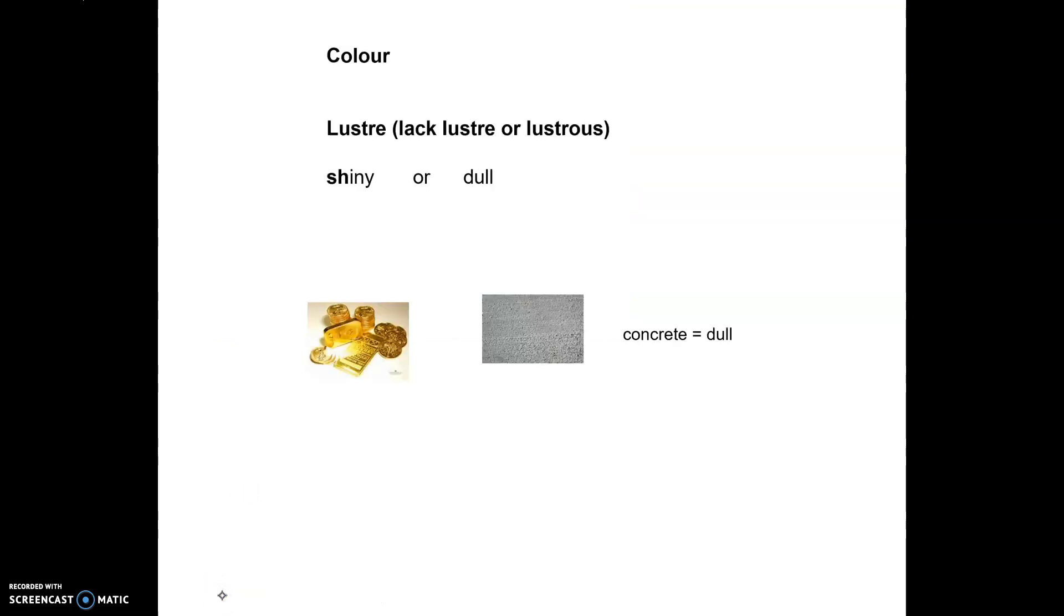So color or luster. Color is self-explanatory. Luster is that shininess or the dullness. So those gold coins, super super shiny. That concrete, it's pretty dull, so not very much luster.